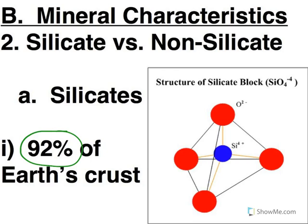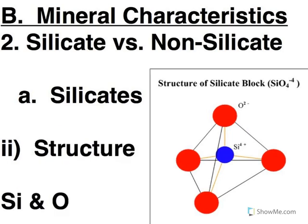But what is a silicate? A silicate is anything that is made out of a combination of silicon and oxygen.